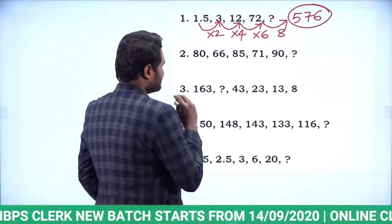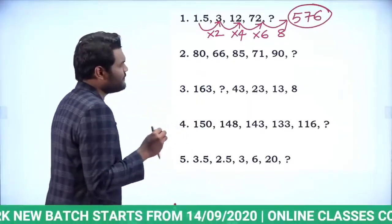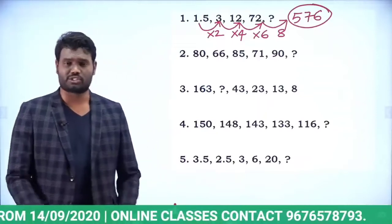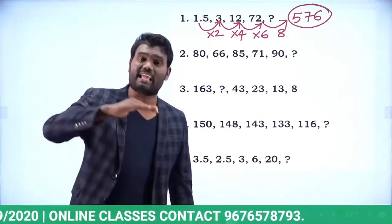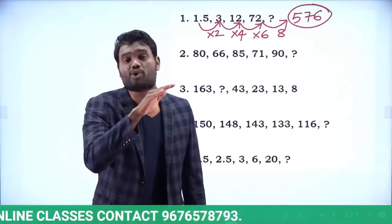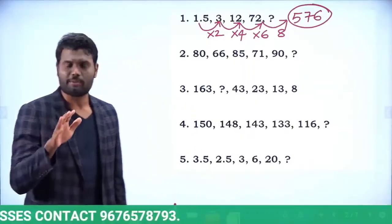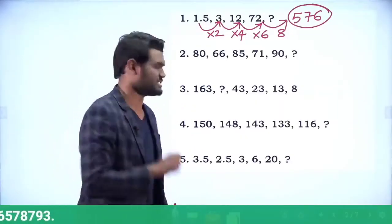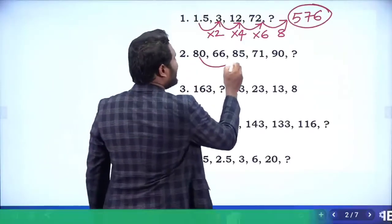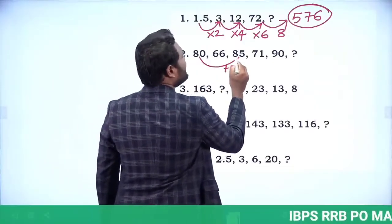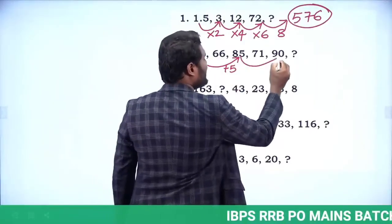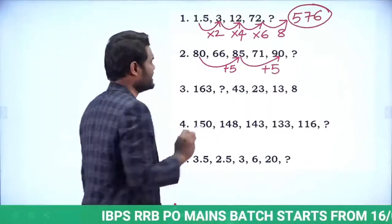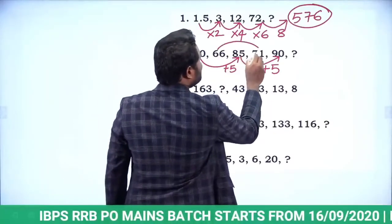The next question is: 80, 66, 85, 71, 90, question mark. The series is neither gradually increasing nor decreasing. This question is based on an alternate series.